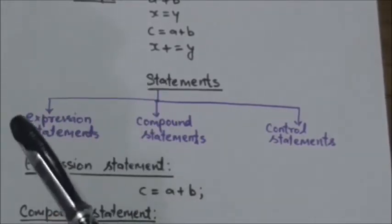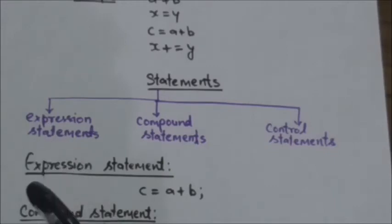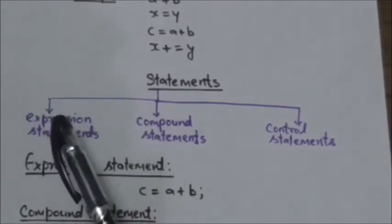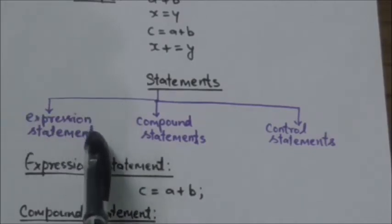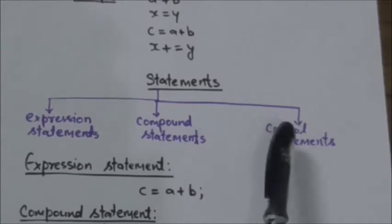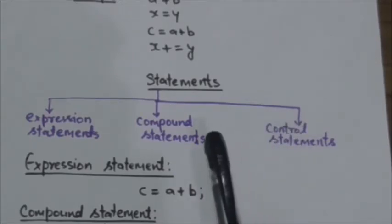So what is a statement? Actually, a statement causes the computer to carry out some action. And there are three different classes of statements in C: first one is expression statements, second is compound statements, and the third is control statements.